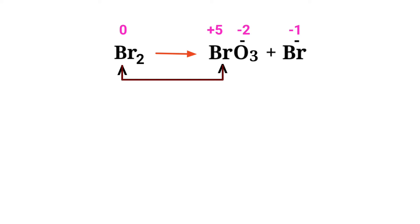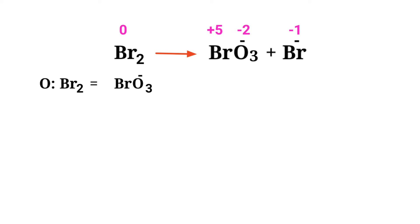In this equation, Bromine has a charge of 0 and it is changing into plus 5, so Bromine is being oxidized. In this equation, Bromine has a charge of 0 and it is changing into minus 1, so Bromine is being reduced.